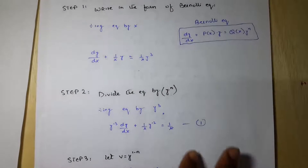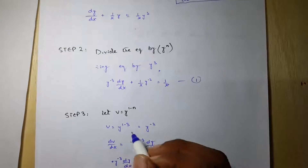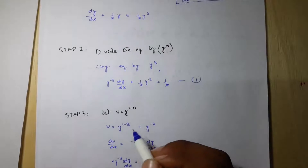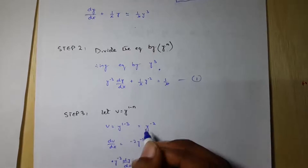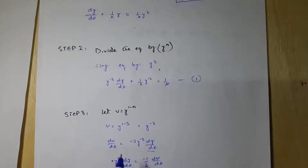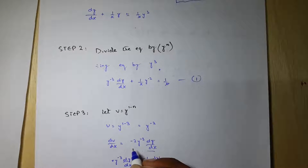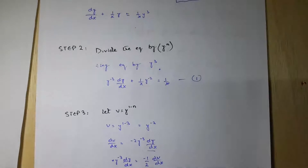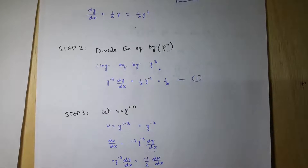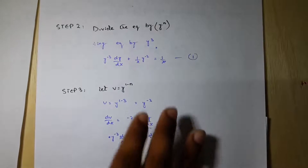Let's call this equation number 1. Step 3: let v equal to y^(1−n), so v equals y^(−2). After differentiating, dv/dx equals minus 2 y^(−3) dy/dx. Therefore, y^(−3) dy/dx equals minus (1/2) dv/dx.